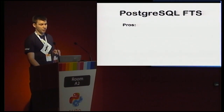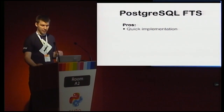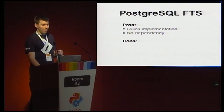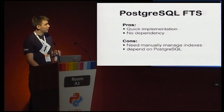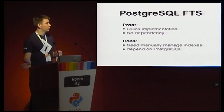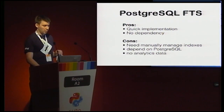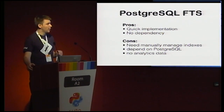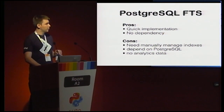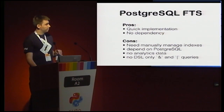To summarize Postgres full-text search: the pros are quick implementation, and no additional dependencies. The disadvantages include needing to manually manage indexes since it's not done automatically, being dependent on Postgres (so if you use MySQL it won't work), no analytics data — meaning you can't get search analytics from Postgres, you can only search — and a very simple query builder.